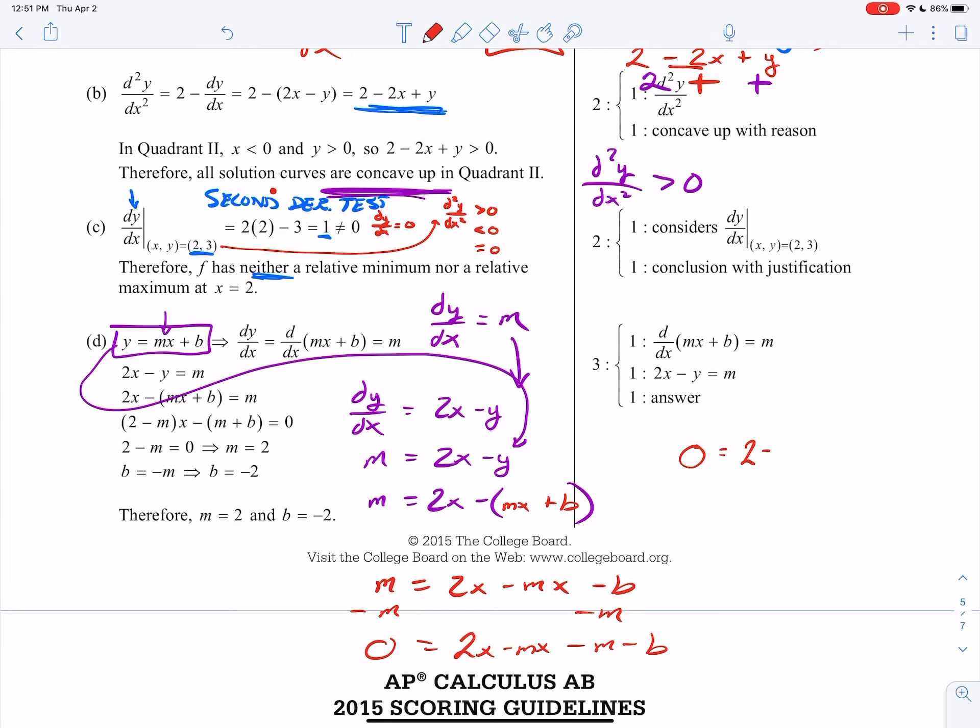Just to make it look a little bit easier, 2 minus m will be left if I factor out an x from the first two terms. Now, the next two terms, negative m minus b, I'm just going to group that together. So all I did was I rewrote it.